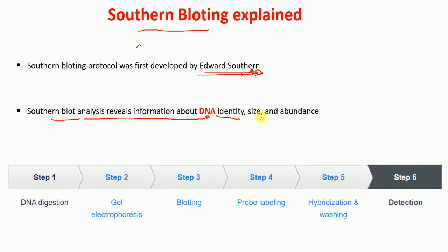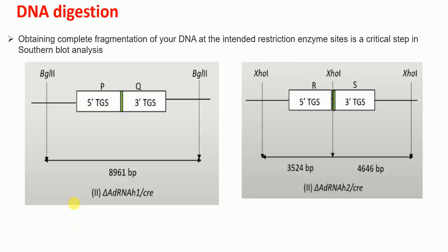The process of Southern blotting involves six different steps: step one, DNA digestion; step two, gel electrophoresis; step three, blotting; step four, probe labeling; step five, hybridization and washing; step six, detection. I will discuss all these steps in detail.